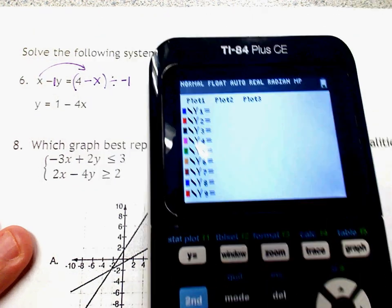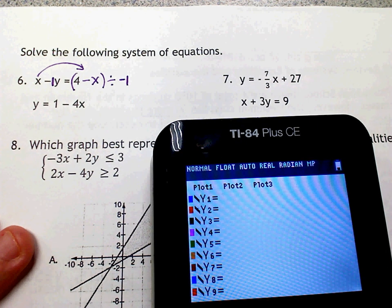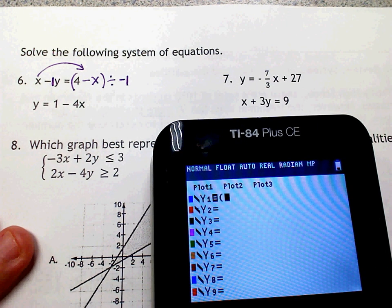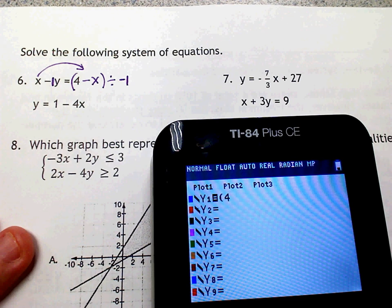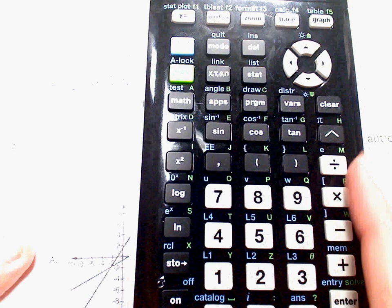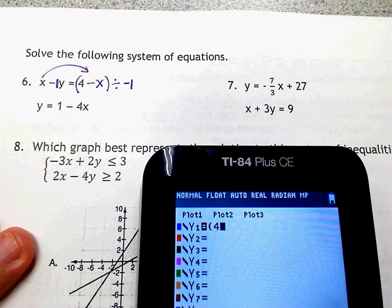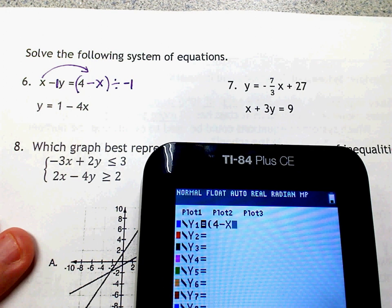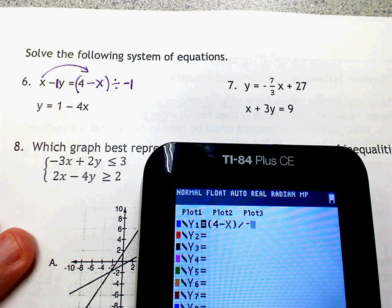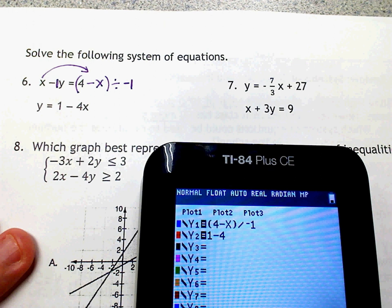Alright, so I've already cleared out my calculator. And I'm going to put, for y1, parenthesis, 4. This is your minus, which you can't even see. This is the minus sign. The negative is right here. So 4 minus x divided by negative 1. And then the next one, I'm just going to put 1 minus 4x. Hit graph.